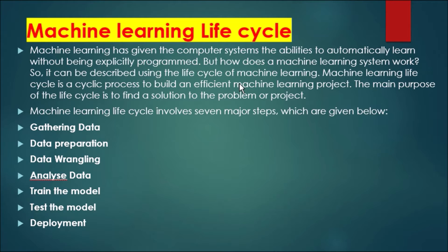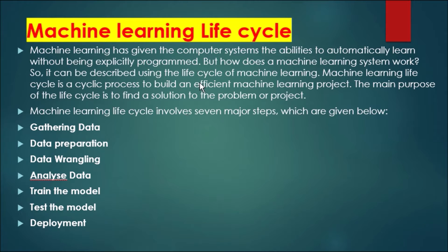Machine learning has given the computer system the ability to automatically learn without being explicitly programmed. Machine learning works on the basis of past data, and there is no need for any explicit program. But how does a machine learning system work? It can be described using the life cycle of machine learning.